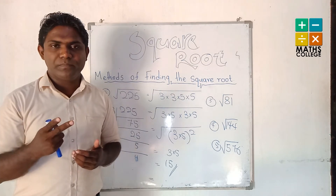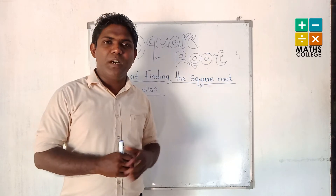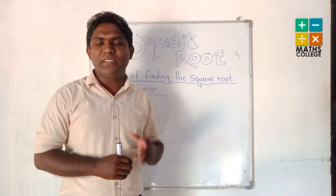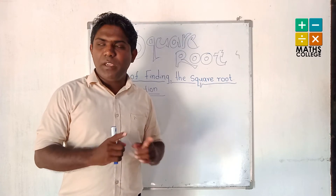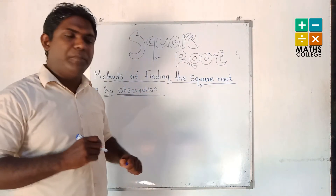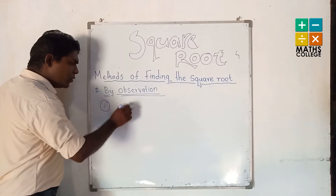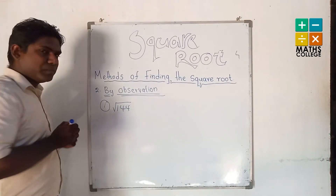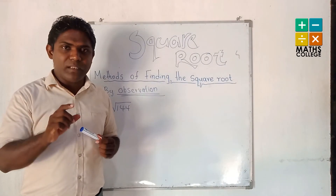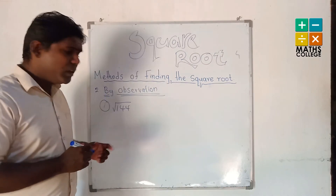Now we are going to learn how to find square roots by using the observation method. We take as the first example the square root of 144. We have to especially consider some key facts.